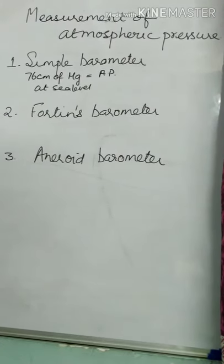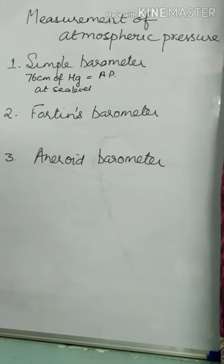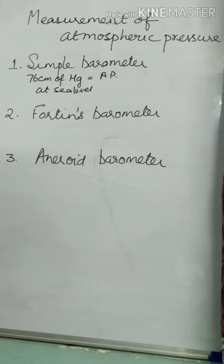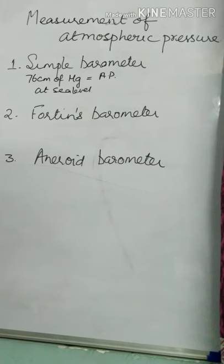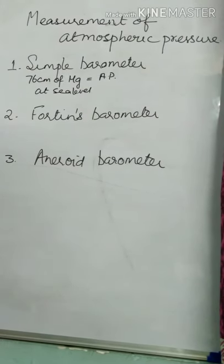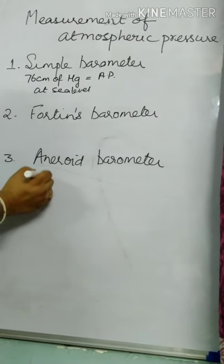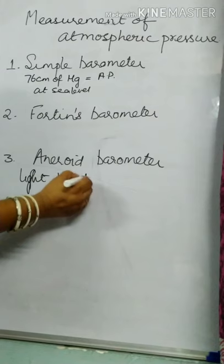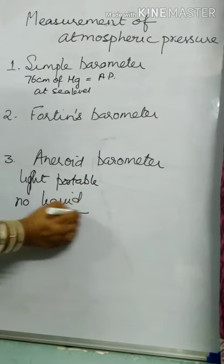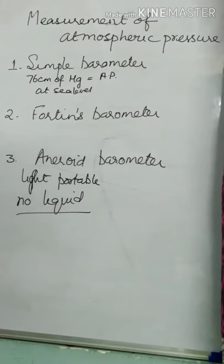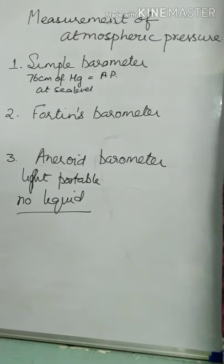The Fortin's barometer simply overcomes certain defects of the simple barometer and also makes use of mercury only. The third barometer is the aneroid barometer. This one happens to be very light and portable. The most important thing about this barometer is that there is no liquid in it — that is why it is very light and portable.